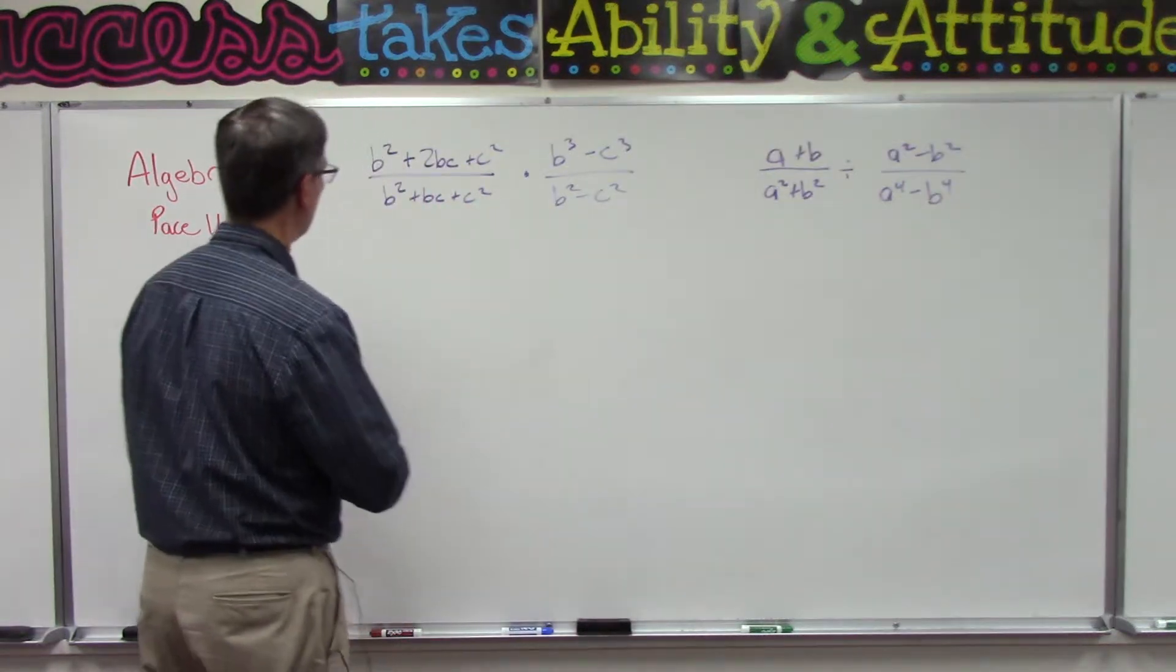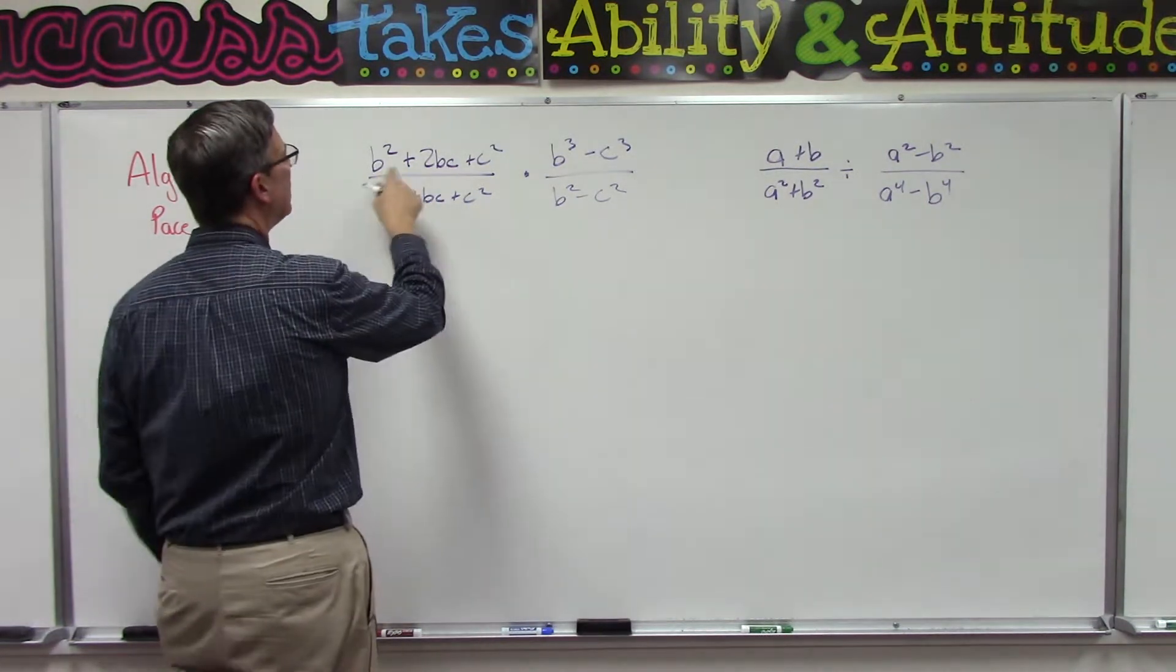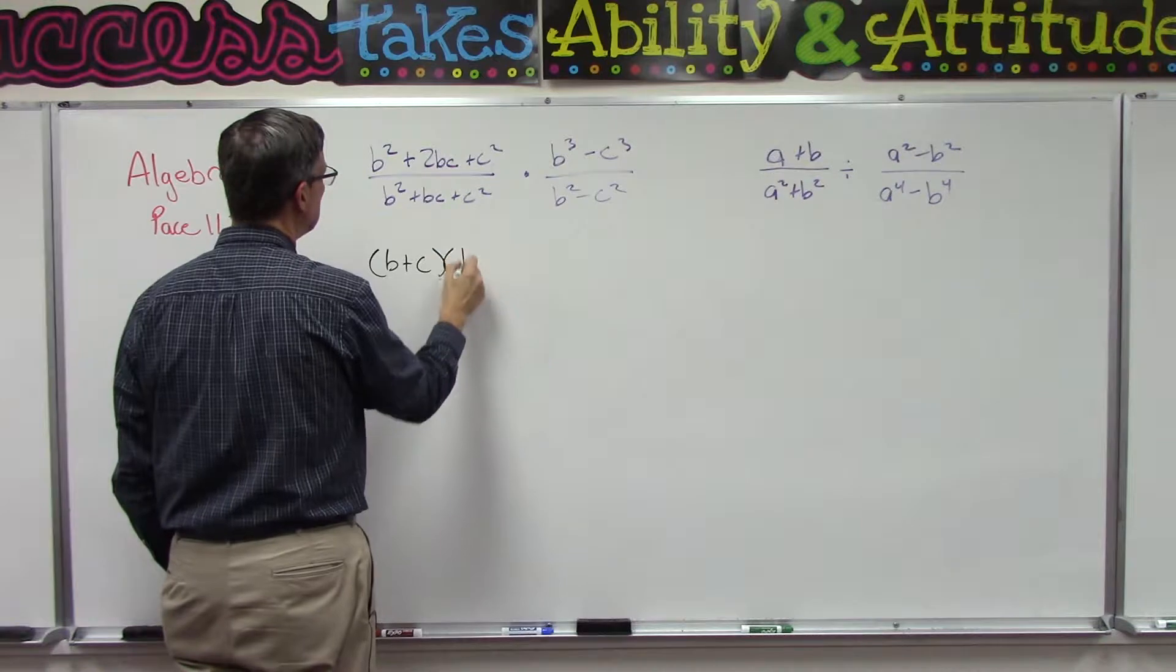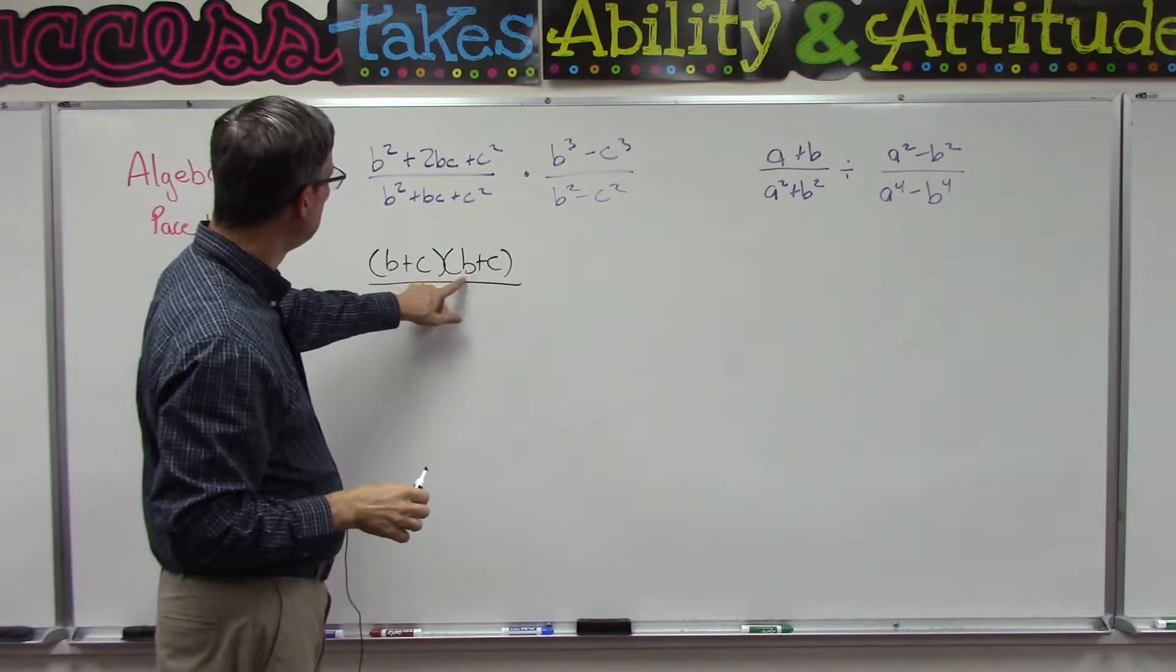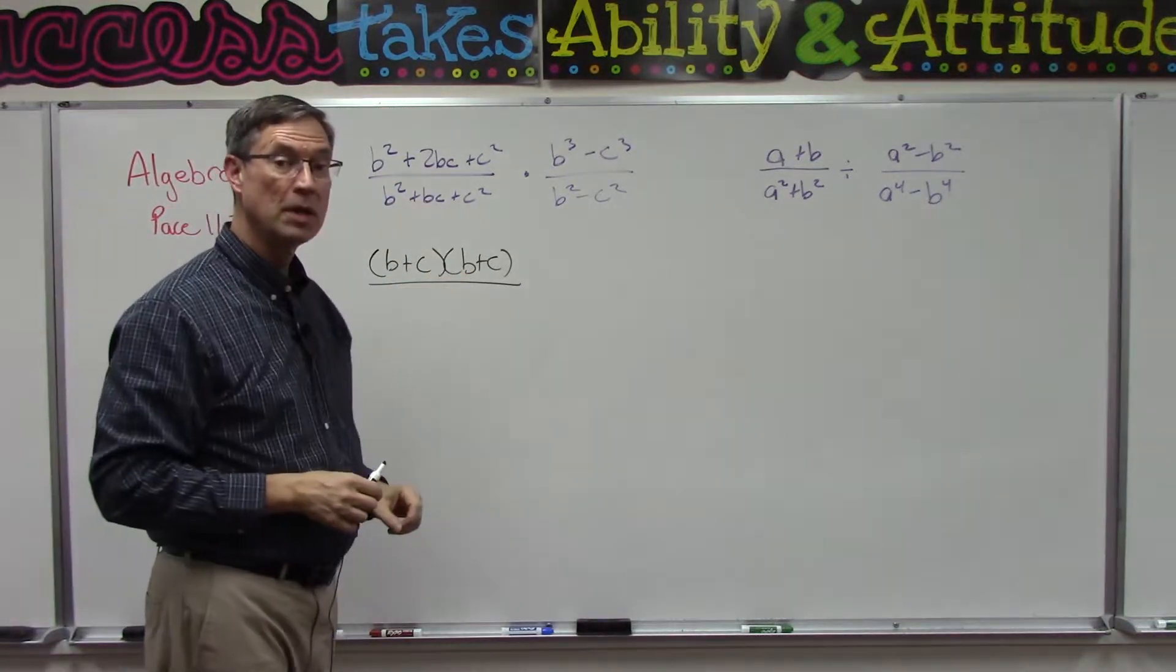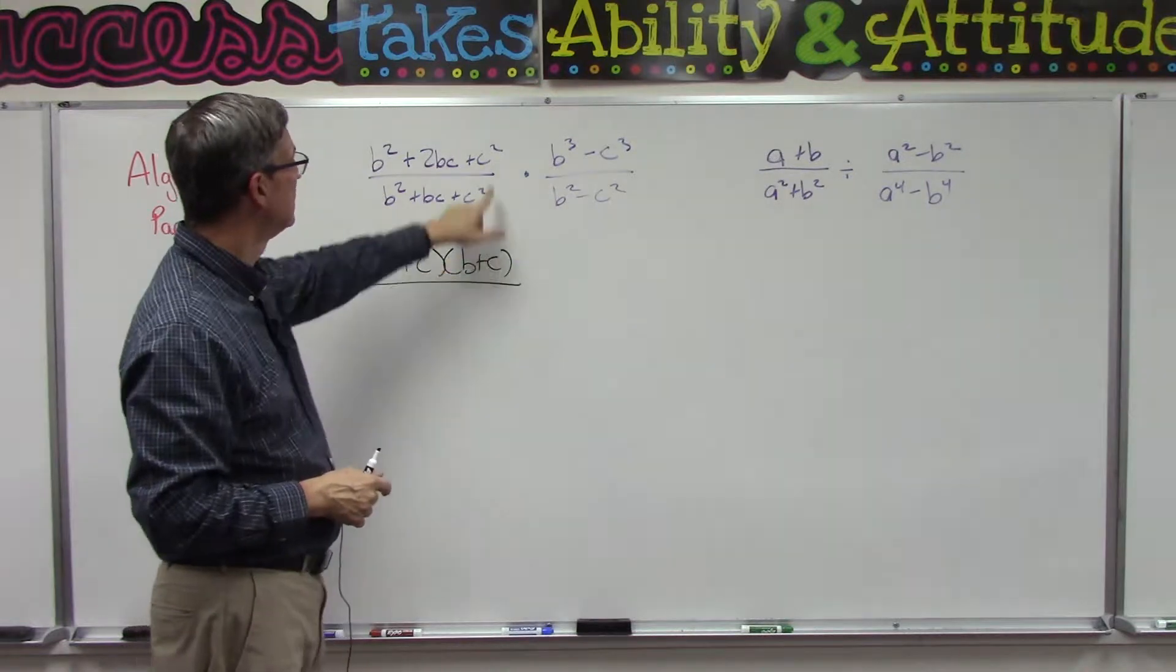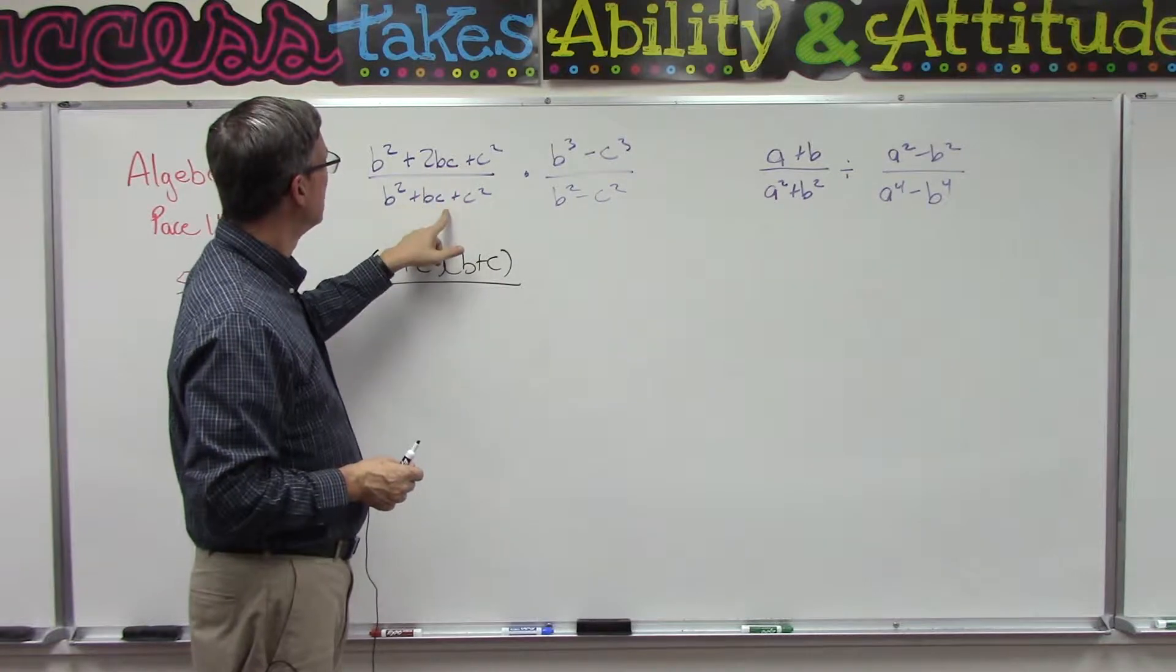Can we factor b² + 2bc + c²? I'm going to propose to you that (b + c)(b + c) would give us that. Let's just double check: b times b is b², the outer is bc and the inner is bc, so when you add bc plus bc you have 2bc, and then for the last term c times c is c². Yay!